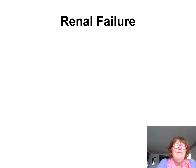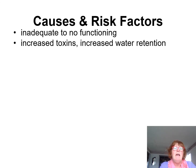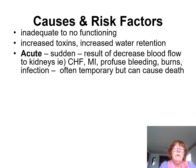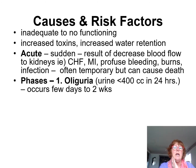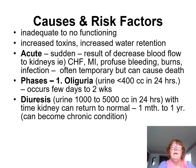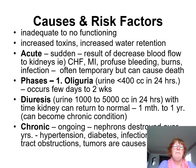Renal failure is caused by inadequate to no functioning of the kidneys, leading to increased toxins and water retention. Acute renal failure is sudden and results from decreased blood flow to the kidneys — examples include congestive heart failure, myocardial infarction, bleeding, burns, and infection. It's often temporary but can cause death or become chronic. The first stage is oliguria — less than 400 mL of urine in 24 hours — followed by diuresis with 1,000 to 5,000 mL in 24 hours, then kidneys return to normal over one month to a year.